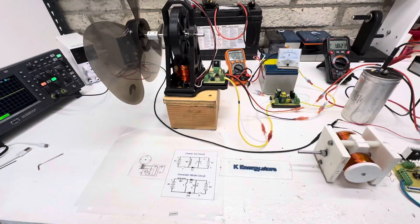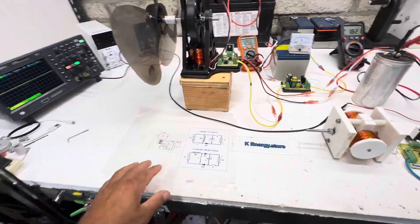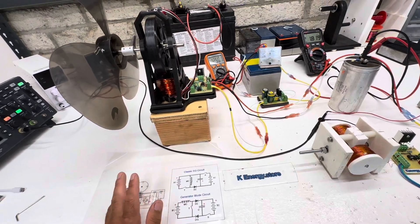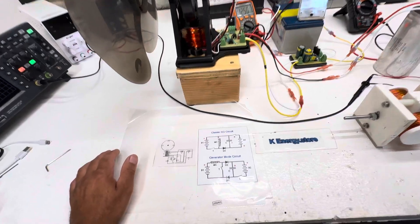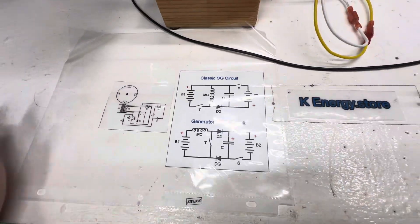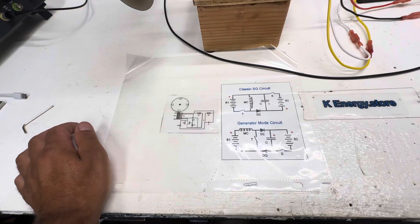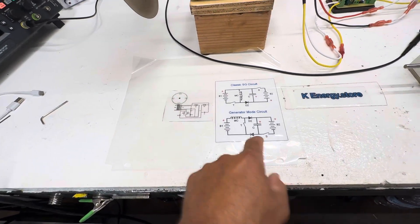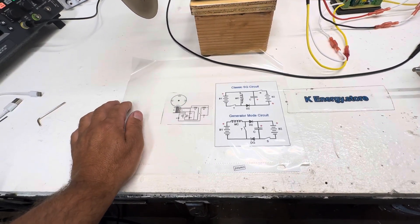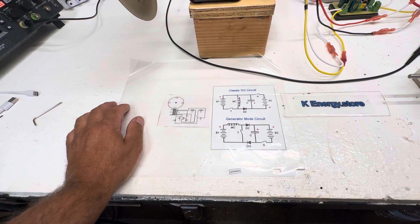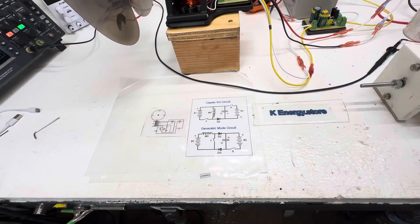So on the last video I had some questions about the generator mode circuit versus the classic SG circuit, and I've shown this before but here's the basic diagram. It just puts it in a little bit different way there, so maybe this will help those of you that were curious about it.